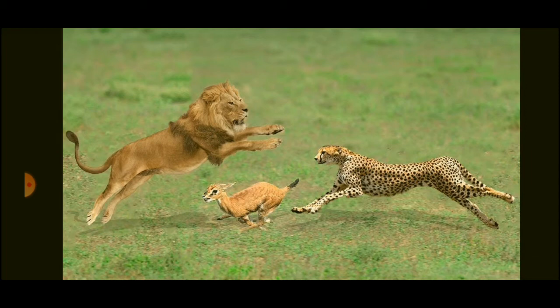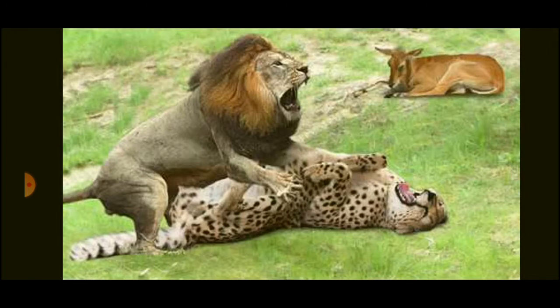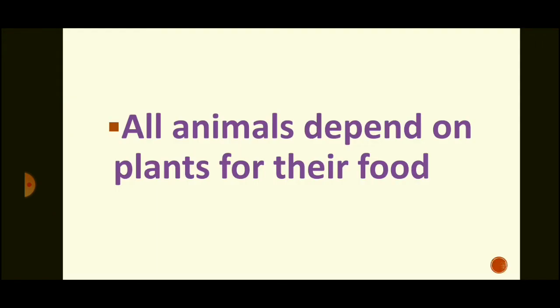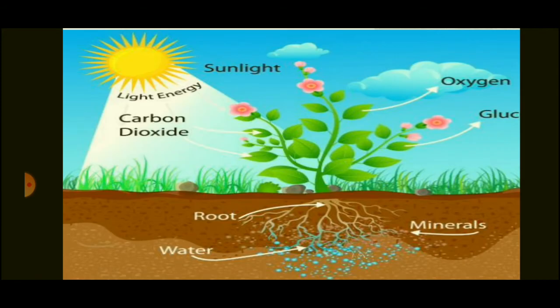If a lion doesn't move from its place, its prey won't come to it, so the lion has to move in search of food. But plants make their own food. Plants have a green color pigment in their leaves called chlorophyll. With the help of chlorophyll, plants make their own food using carbon dioxide, water, sunlight, and chlorophyll. That is why plants are fixed to the ground and do not need to move from one place to another.